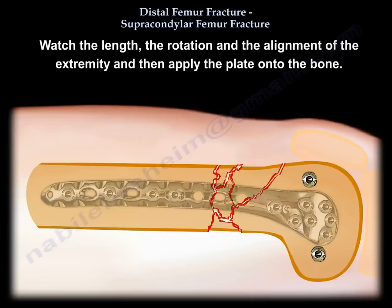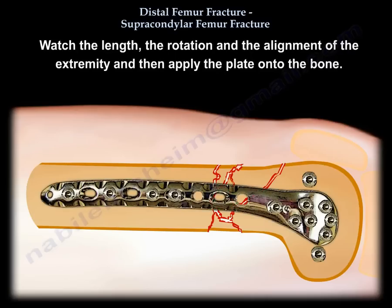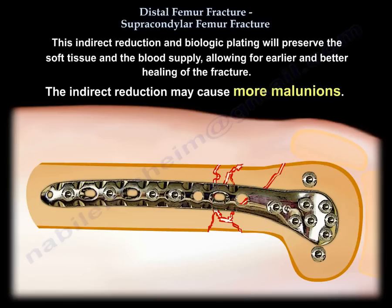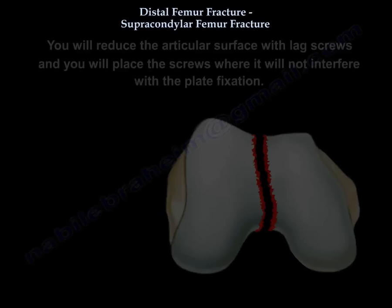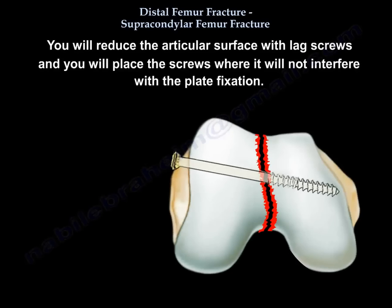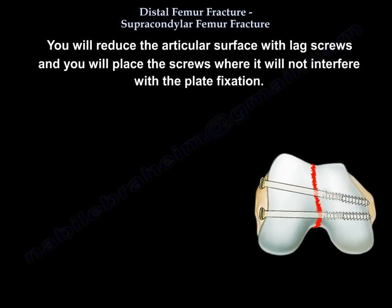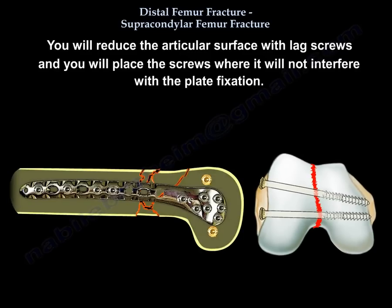You will use traction without disturbing the soft tissue to align and approximate the bony fragments together. Watch the length, rotation, and alignment of the extremity, then apply the plate to the bone. This indirect reduction and biologic plating will preserve the soft tissue and blood supply, allowing for earlier and better healing. You will reduce the articular surface with lag screws, placing them where they will not interfere with the plate fixation.